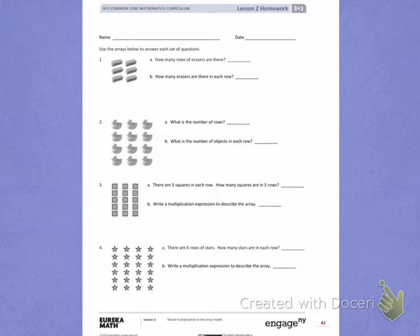Number 1. I see there is an array made up of erasers. Letter A: How many rows of erasers are there? Rows go across, so when I count, I can see 1, 2, 3 rows of erasers.